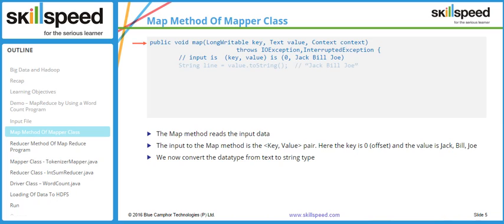We convert the textual value into a string type. The string variable 'line' will store the value 'Jack Bill Joe'. You can see the corresponding code snippet in arrow number two.